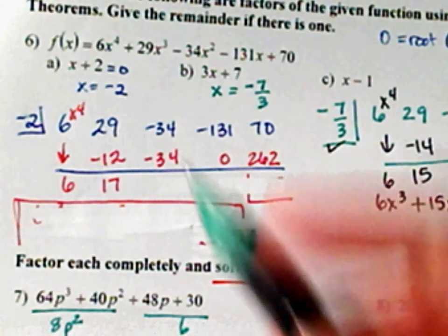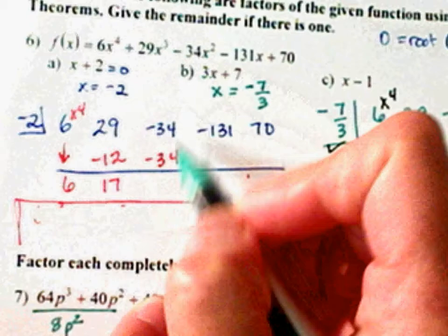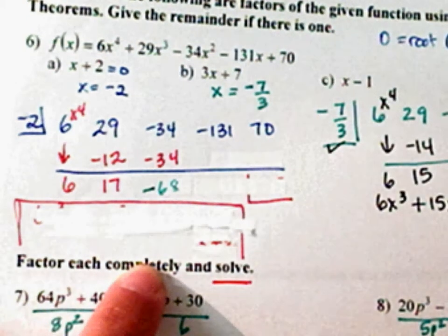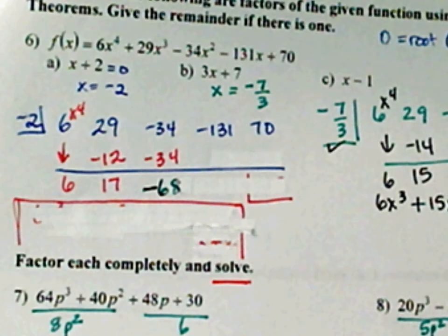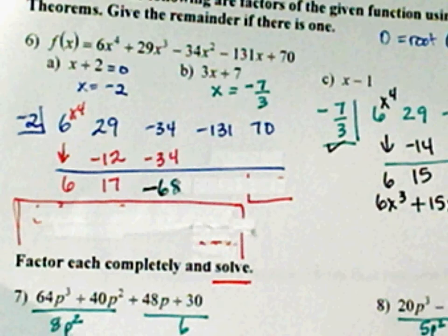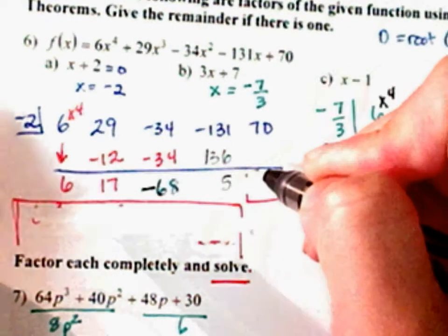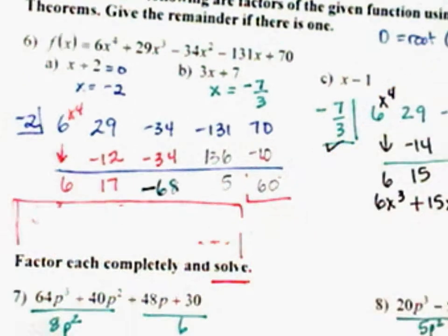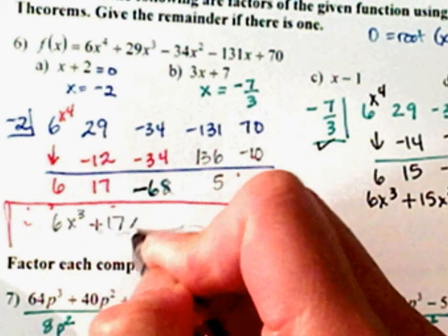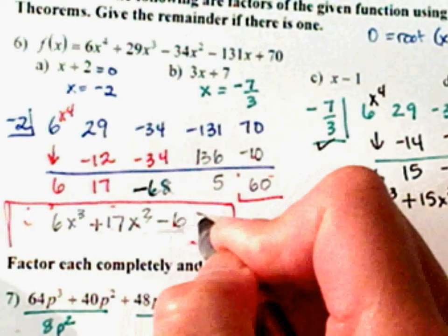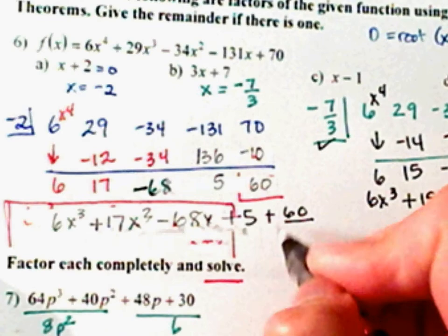What I had done was I had subtracted the 2, but it should have been add. And when I add, it changes everything here. So negative 34 minus 34 is negative 68. Negative 68 times 2 comes out to be positive 136. 136 minus 131 is 5. 5 times negative 2 is negative 10 with a 60 left over.